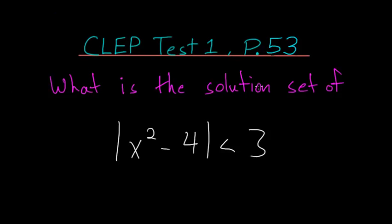What is the solution set of the absolute value of x squared minus 4 is less than 3? As in previous absolute value problems, we have to separate this into two cases.